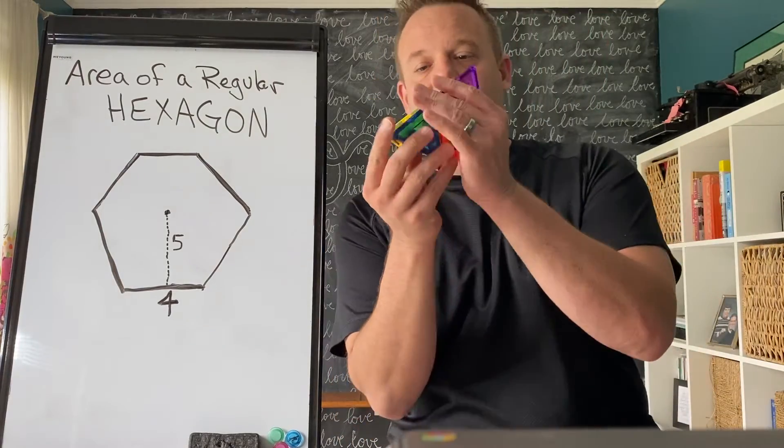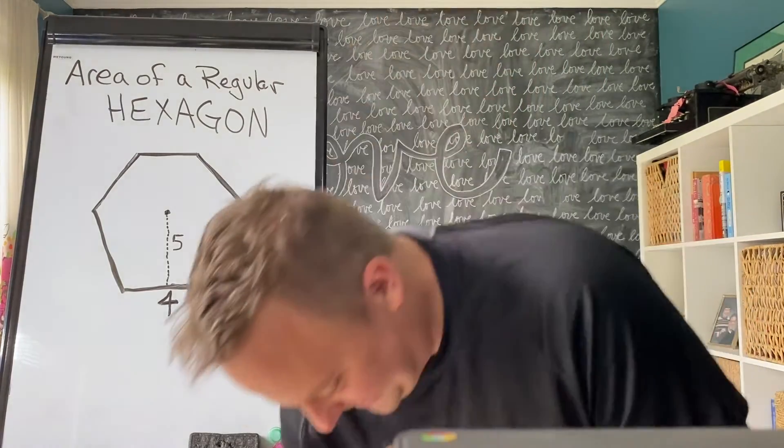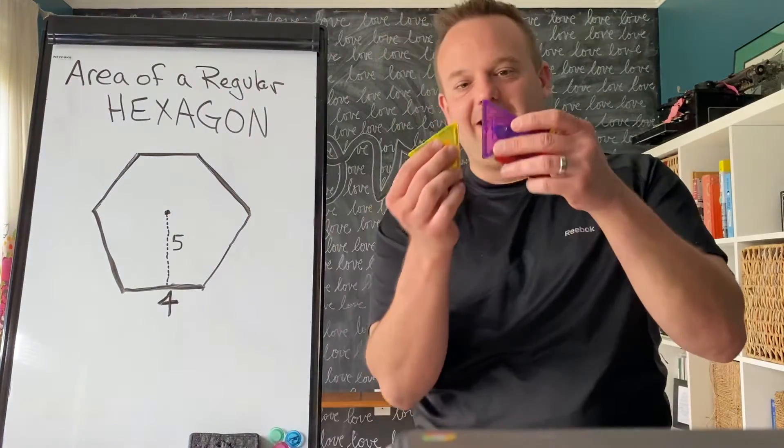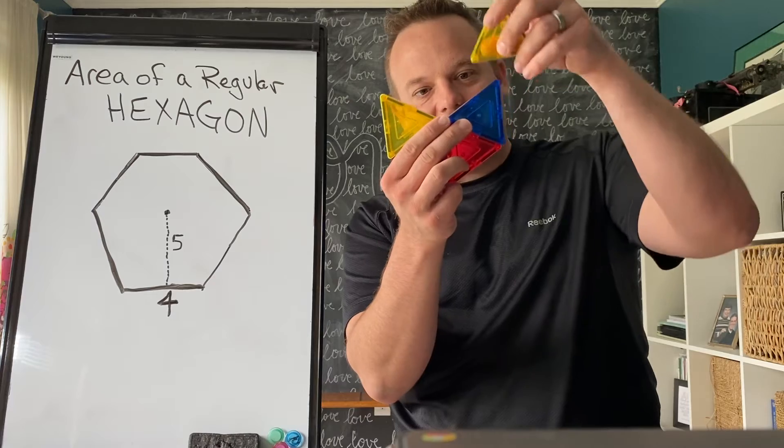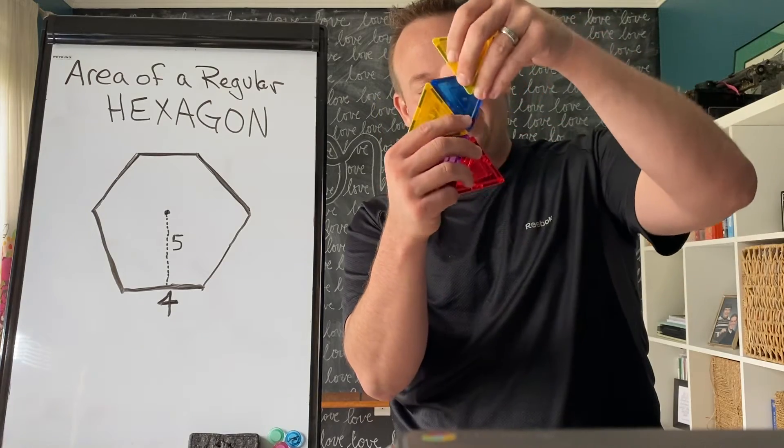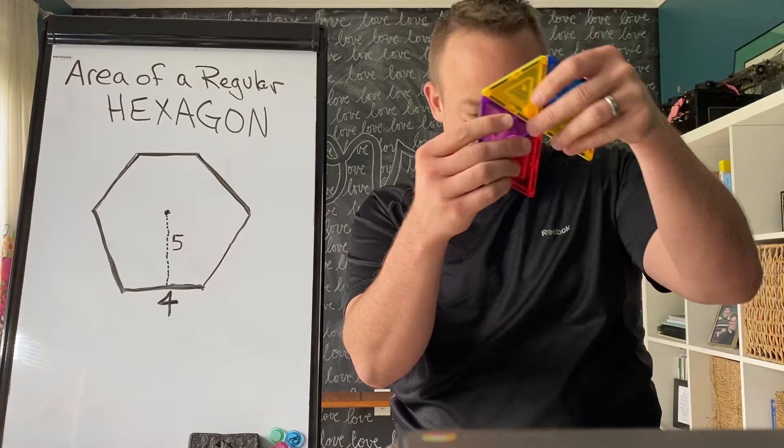Now I want to show you something here. Whoops! Look at this. A regular hexagon is made up of... Oh, missing one.